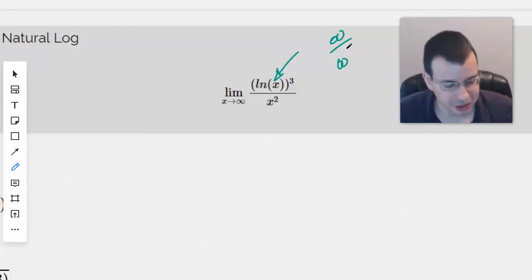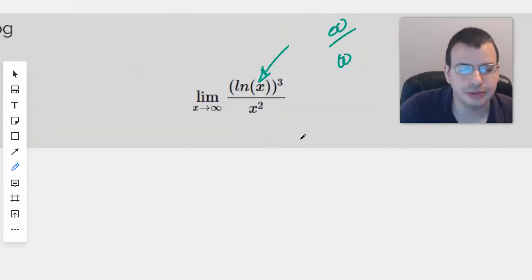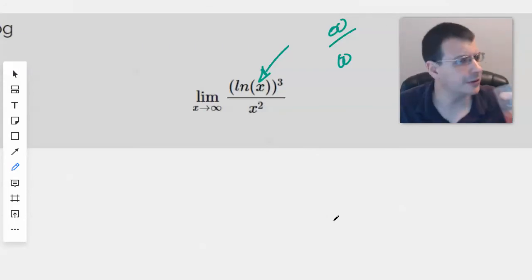You could say infinity squared, but you're not really supposed to say that at all. Infinity is just infinity. You don't get bigger than infinity, though some infinities are bigger than others. So to determine which infinity is bigger, we're going to have to use L'Hopital's rule.